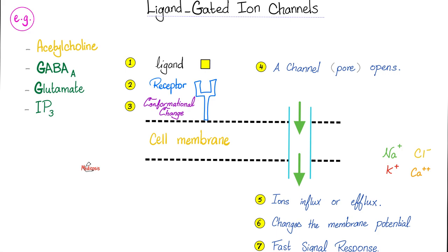Ions will influx or efflux - they will come into the cell or leave the cell. What kind of ions? Could be sodium, chloride, potassium, calcium - any ion, any electrolyte. These are positives or negatives. Therefore, when they go in or go out, they change the membrane potential. And this is a fast signal response - boom, it's the switch.